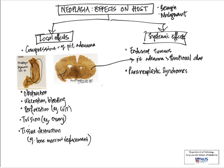Paraneoplastic syndromes occur when tumors produce hormones or substances that the cells normally do not produce. A good example would be squamous cell carcinoma in the lung, which can sometimes produce parathyroid-related protein, giving rise to abnormalities in calcium metabolism.